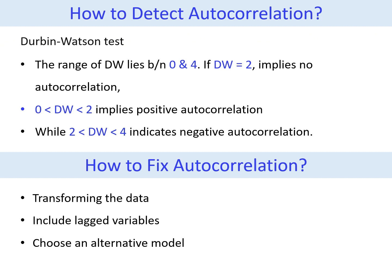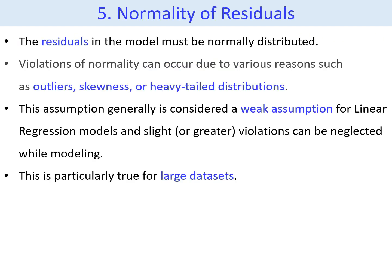Lagged variables are values of a variable from previous time periods. For example, you might include the sales of the previous month as a predictor of the current month's sales. Normality of residuals is the fifth assumption test for regression analysis. To ensure this assumption, the residuals in the model should be normally or evenly distributed. Violations of normality can arise from factors such as outliers, skewness, or heavy-tailed distributions. Generally, this assumption is considered a weaker assumption for linear regression models, and slight or even significant violations of normality can often be overlooked during modeling.